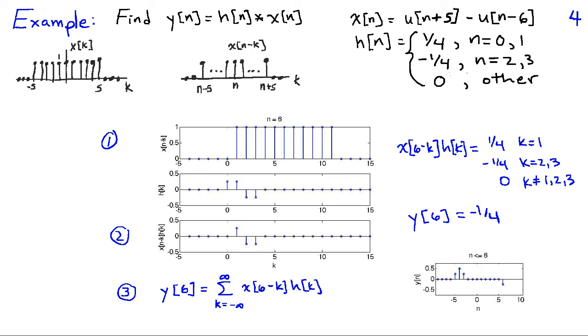Here's the case where n is equal to 6. And you can see that the trailing edge of x of n minus k now overlaps with at time k equals 1. And so the product of these two gives me 1 fourth at k equals 1, minus a fourth at k equals 2 and 3, and 0 everywhere else. So if I sum up all the values in this, I get 1 fourth minus a fourth minus a fourth, and I get y of 6 is minus 1 fourth.